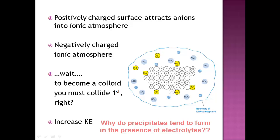So a lot of these gravimetric precipitations are done in the presence of an electrolyte, because it helps to decrease the thickness of these ionic atmospheres, making it easier for these colloids to actually come together and coalesce. All right, let's move on.